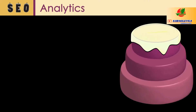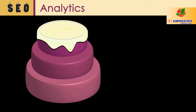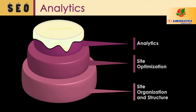If you think of SEO as a three-layer cake, the layers would be site organization and structure, then site optimization, then analytics. Finally, the finishing touch, or the frosting, would be promotion that includes, among other things, social media, blogging, and paid ads.